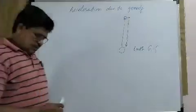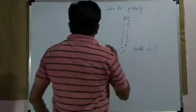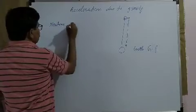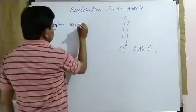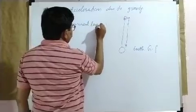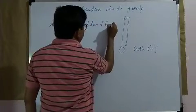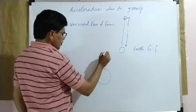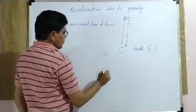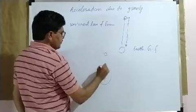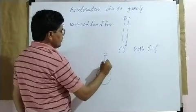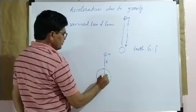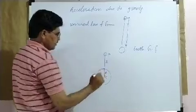According to Newton's universal law of gravitation — suppose this is the earth's surface and any object is placed at its surface. The distance between these two objects is small r. This is the mass of that object and this is the mass of the earth. This is the center of the earth and this is the radius of the earth.